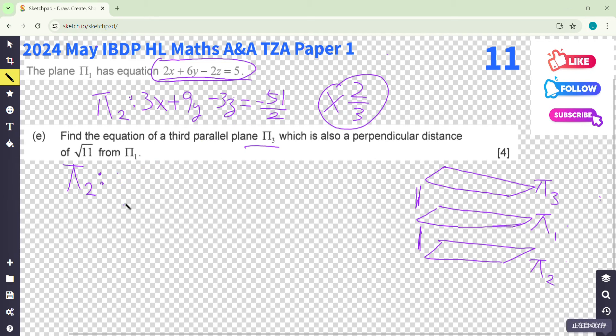So the left hand side will become 2x plus 6y minus 2z. The same because they are parallel. And on the right hand side becomes negative 51 over 2 times 2 over 3. Beautiful. Negative 17.